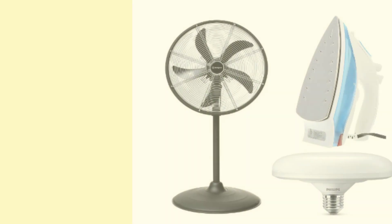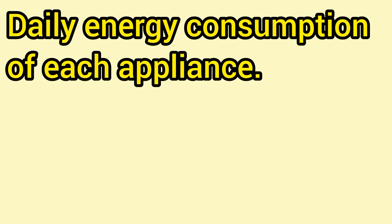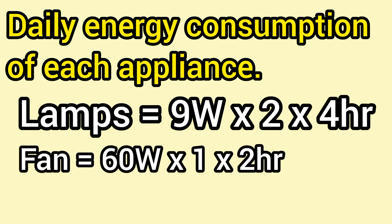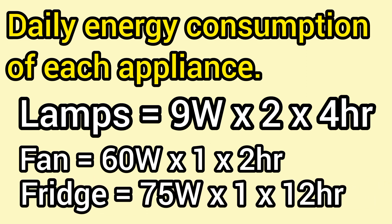The next thing we'll do is look at how many hours each of these appliances will be used in a day. Our two bulbs will be used for a maximum of four hours in a day, our fan for a maximum of two hours in a day, and our refrigerator will run 24 hours in a day. However, the refrigerator has a thermostat that controls the compressor, so we assume the compressor will work for 12 hours and be off for 12 hours — so we use 12 hours in the calculation.